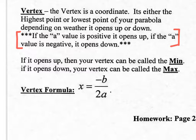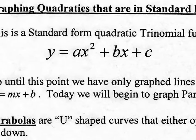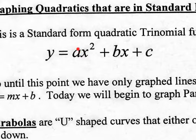This is very important — highlight this, box it in. The A value, the number out in front: if it's positive, the U-shaped curve will open up. If it's negative, it's going to open down. Going back to standard form, the A value in front determines the direction.